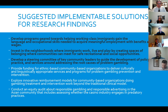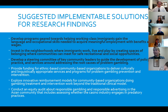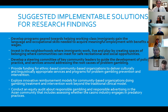Suggested implementable solutions from the research findings include: developing programs helping working-class immigrants gain language and occupational skills for meaningful employment with benefits and wages; investing in neighborhoods where immigrants work and live by creating spaces of belonging for safe recreational and social opportunities; and developing a steering committee of key community leaders to guide development of policy, practice, and services addressing root causes of problem gambling.